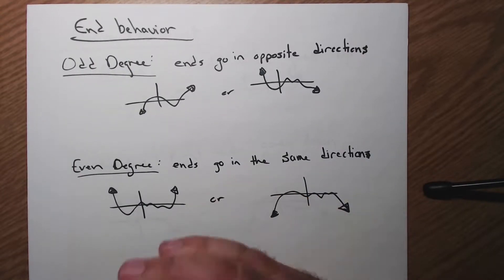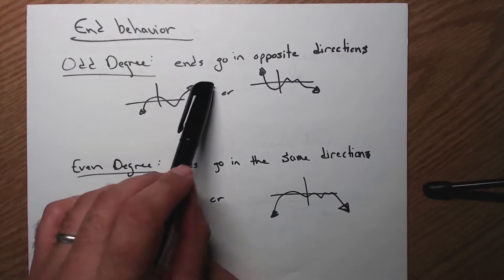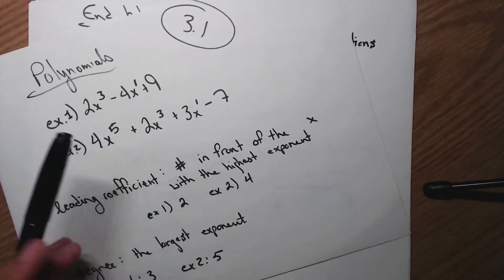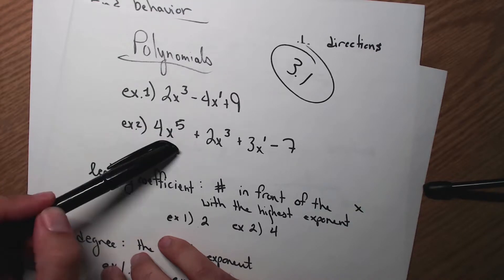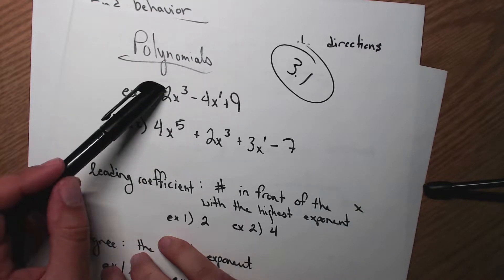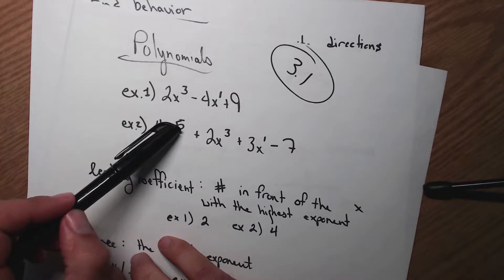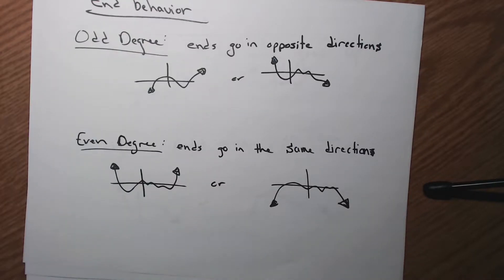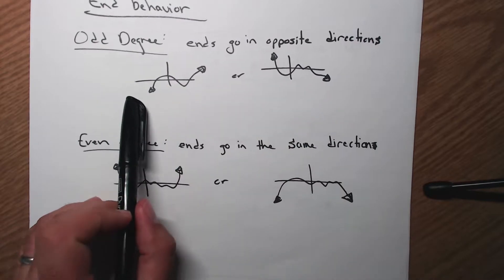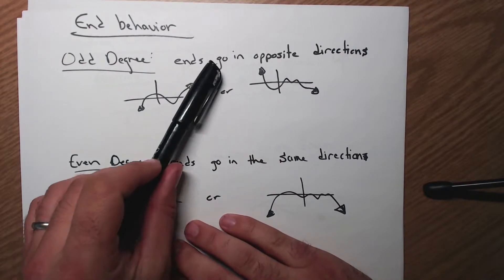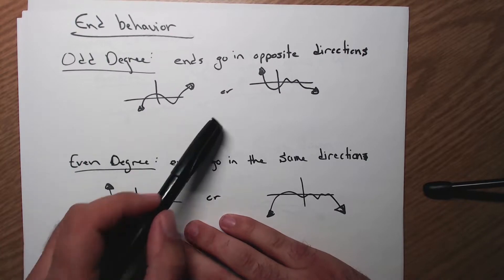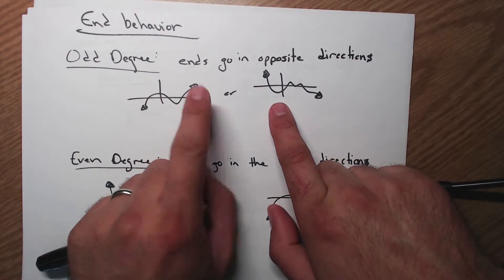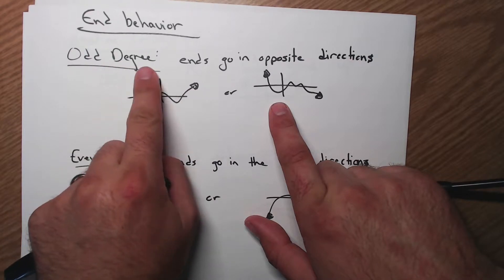End behavior is about what the ends of our graph do. If it's an odd degree — like in these examples where the highest exponents are 3 and 5, both odd numbers — the ends are going to go in opposite directions. So the left side and the right side go differently: one goes up and the other goes down, or down and then up.